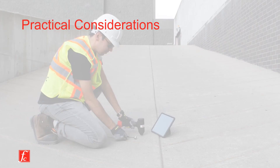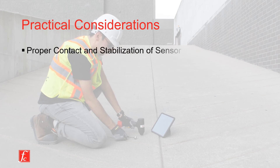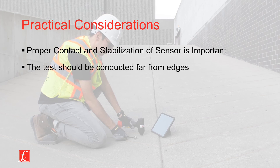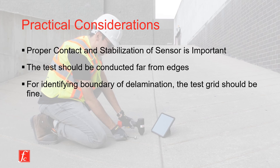ImpactEcho is an effective method in evaluating concrete elements. However, field conditions might affect the accuracy and resolution of the test results. It is crucial to make sure that the transducer or ImpactEcho probe is stabilized on the concrete surface. The boundary and edge effects can make the interpretation of the results quite challenging. Therefore, it is essential to perform the test far from the edges of concrete walls or slabs. Finally, when testing large areas for identifying the boundary of delamination regions, it is important to adopt a fine test grid to increase the resolution of the heat map.